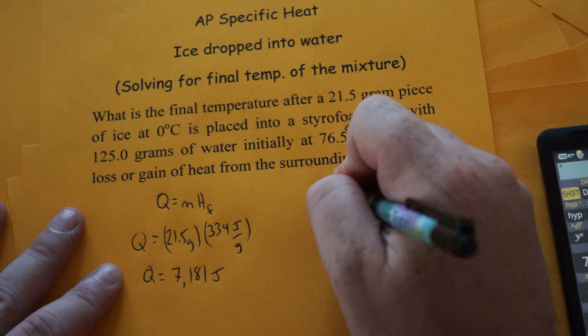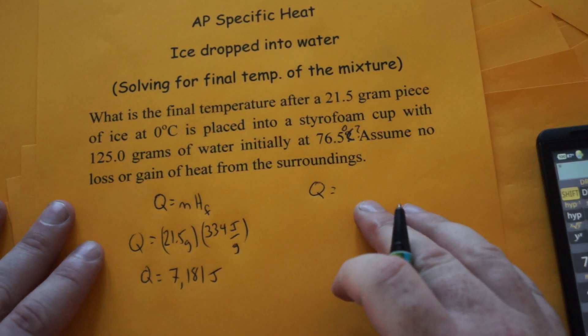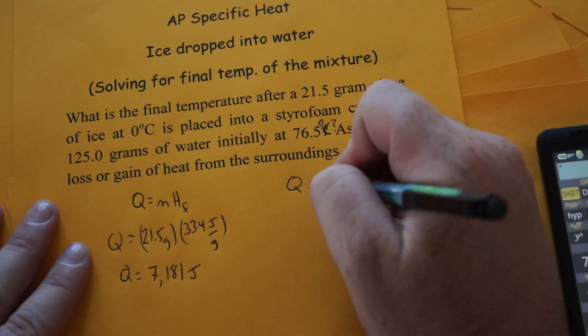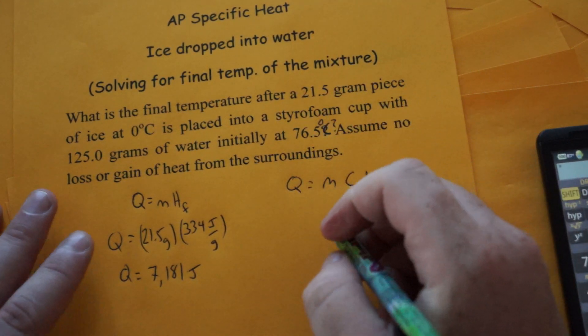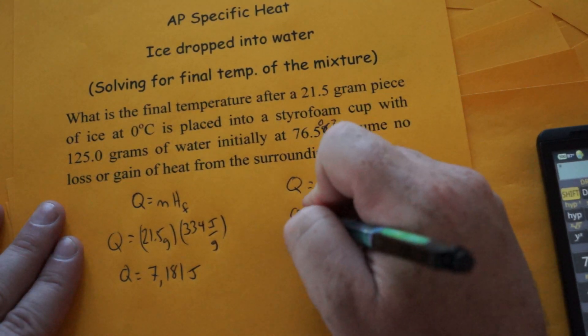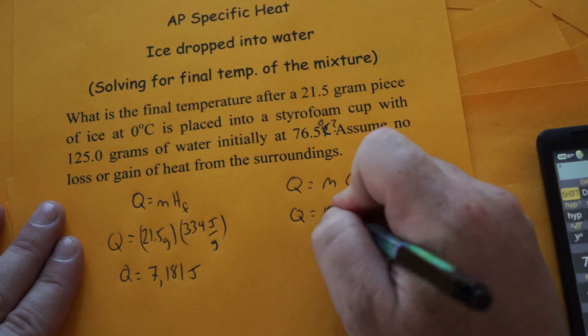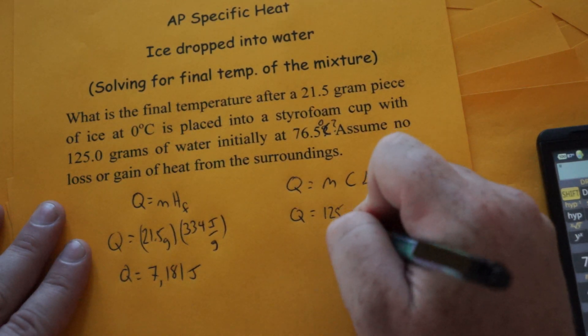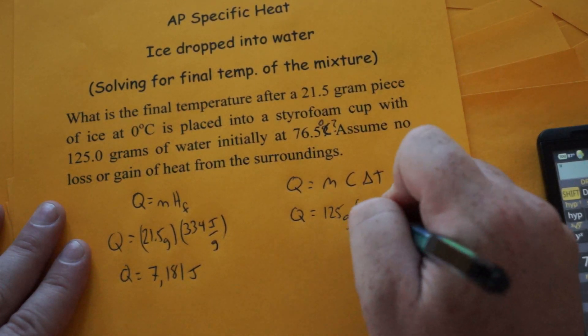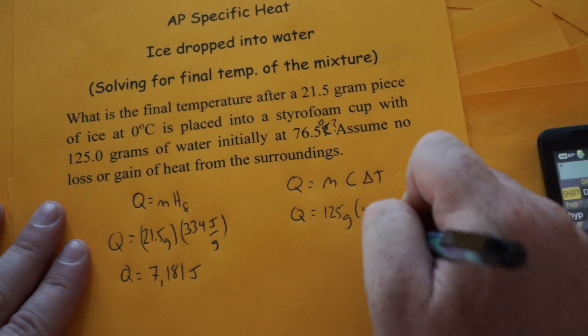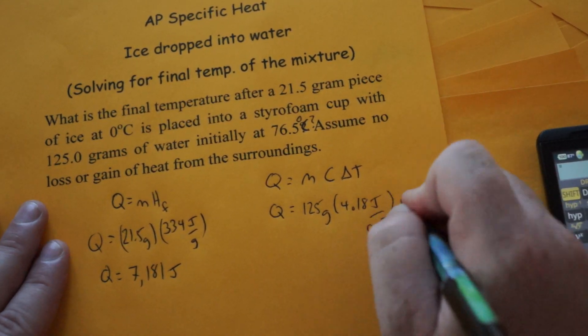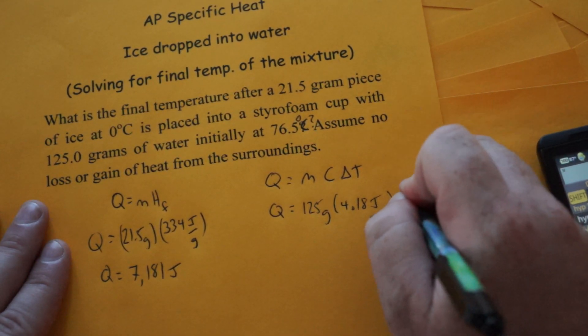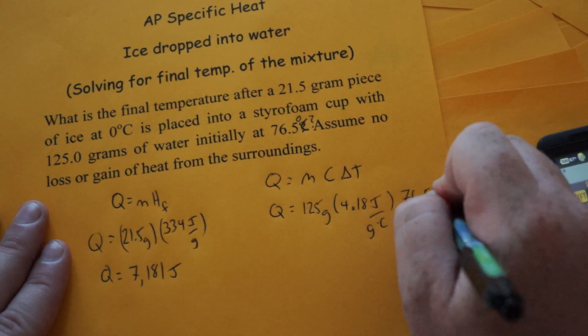Now the other scenario was that the water would go all the way to zero degrees. So what we're going to do is figure out if that happened, the amount of energy that has to be released from the warm water to bring it down to zero degrees. So the specific heat of water is 4.18 joules per gram degrees Celsius and it would have to drop by 76.5 degrees C.